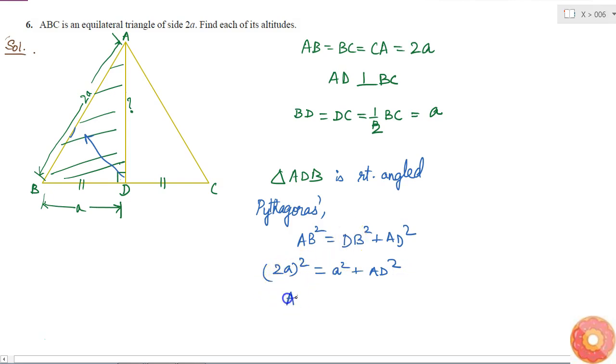So what will be my AD square? AD square is equal to 2A square, which is 4A square, minus A square. It is equal to 3A square. So if AD square is equal to 3A square, then AD is equal to root 3 times A. So I got that the value of this altitude is equal to root 3 times A.